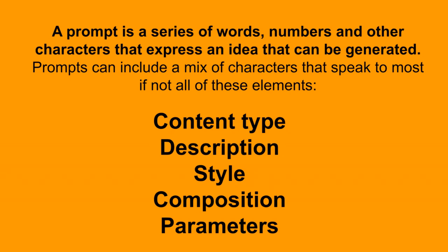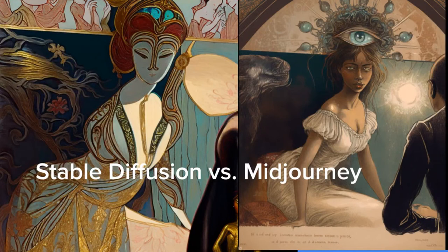Finally, parameters help constrain and give the algorithm what it needs to know — for example, is there an aspect ratio you're trying to deliver, or a specific quality you're looking for? We're going to explore both Stable Diffusion and MidJourney. MidJourney gives you a certain number of images for free before you need to pay. Stable Diffusion and many web-based tools are also free for a while, and then require credits.